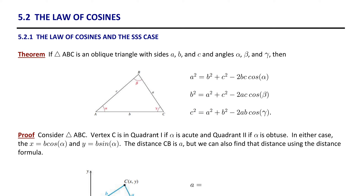Here's the theorem. If triangle ABC is an oblique triangle with sides A, B, and C and angles alpha, beta, and gamma, then the first presentation of the law of cosines is: A squared equals B squared plus C squared minus 2BC cosine alpha.